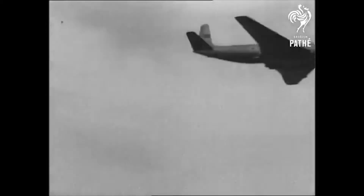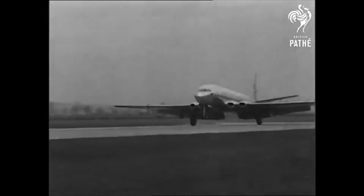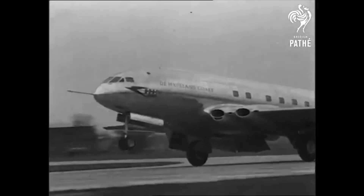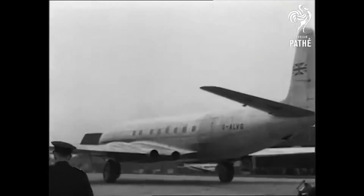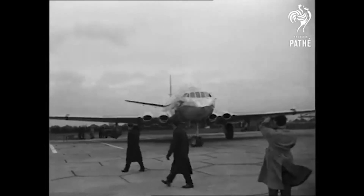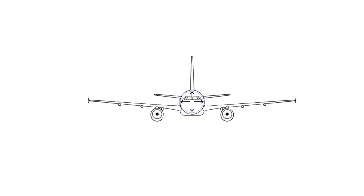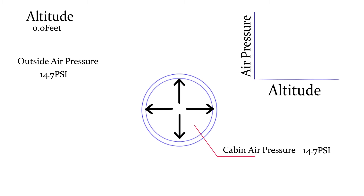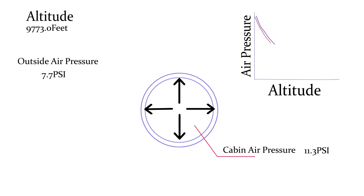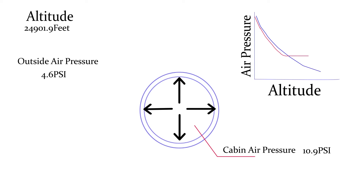The de Havilland Comet can cruise at up to 42,000 feet. At those altitudes, the aircraft had to be pressurized for passenger comfort and safety. As an aircraft ascends to high altitudes, atmospheric pressure decreases, making it very hard to breathe, so the aircraft is kept pressurized. This means the pressure inside the aircraft is higher than the outside air pressure, causing the fuselage to expand ever so slightly as it climbs, which causes stress to develop in the structure of the aircraft.